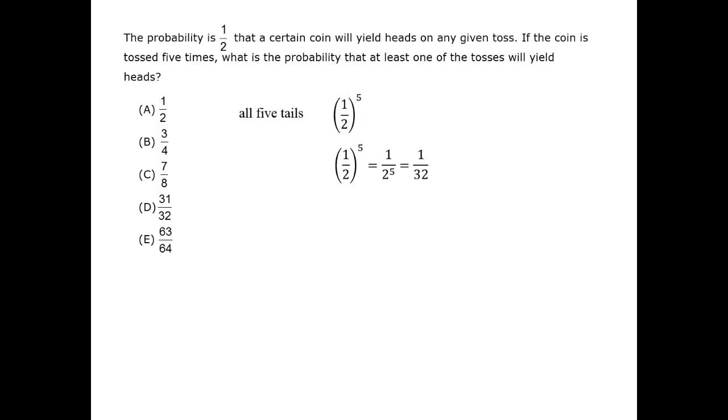That's all tails. So the odds that anything except that happens are one minus one over thirty-two, or thirty-one over thirty-two. The correct answer is D.